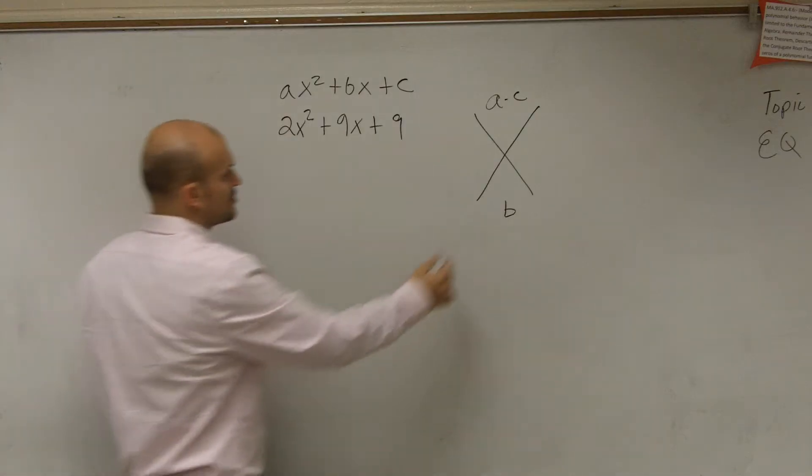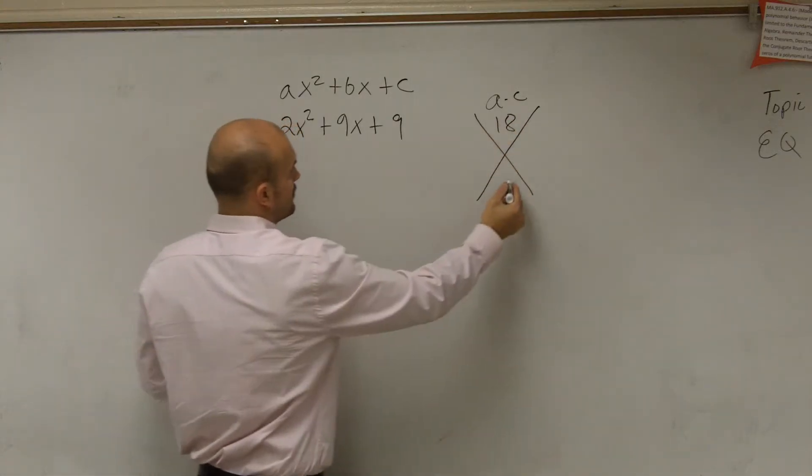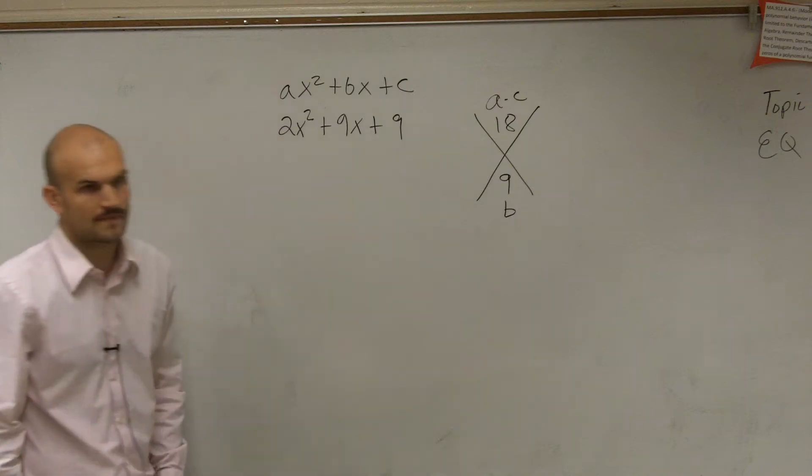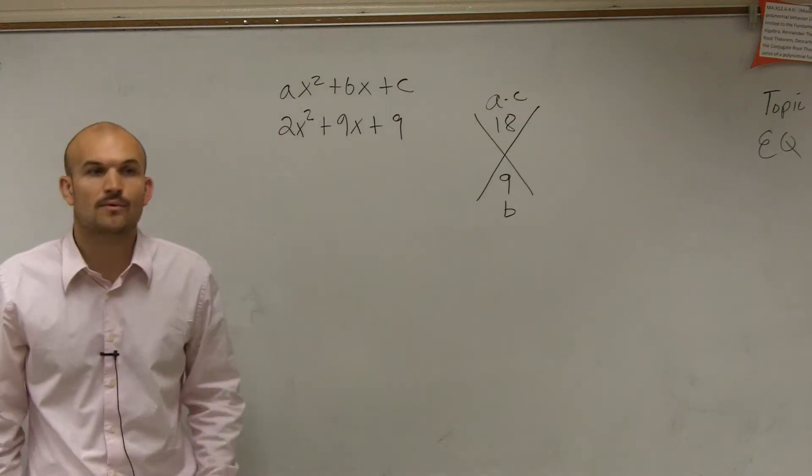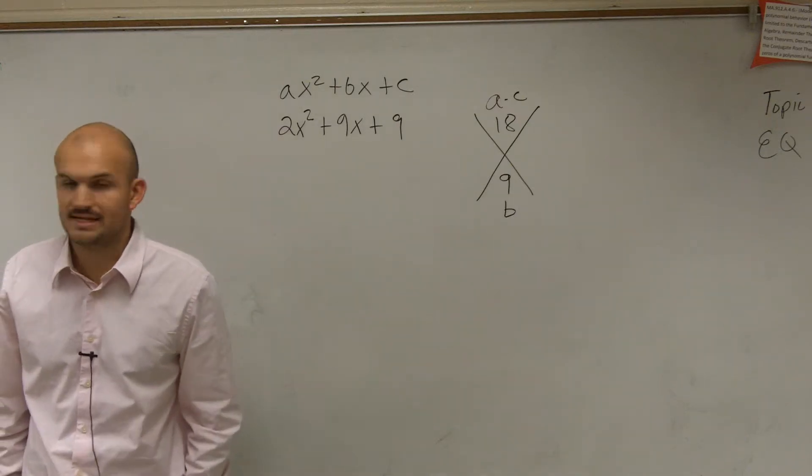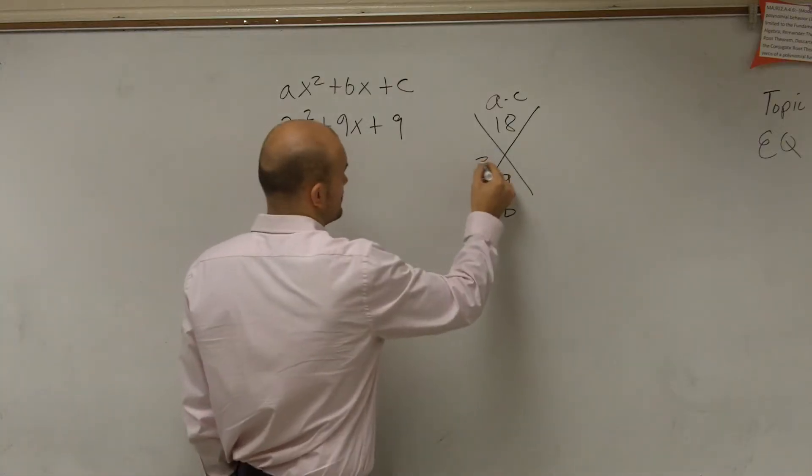So a times c is going to be 18, and then b is going to equal 9. So we think about it and say, what two numbers multiply to give us 18 but add to give us 9? 6 and 3.